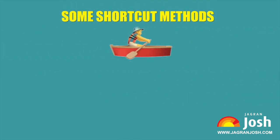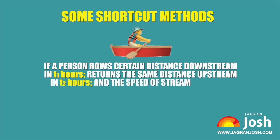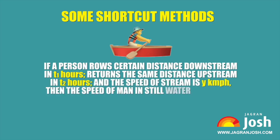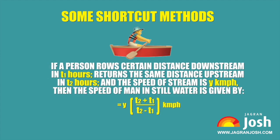Shortcut Method 1: If a person rows a certain distance downstream in T1 hours, returns the same distance upstream in T2 hours, and the speed of stream is y km per hour, then the speed of the man in still water is given by: y × (T2 + T1) / (T2 − T1) km per hour.